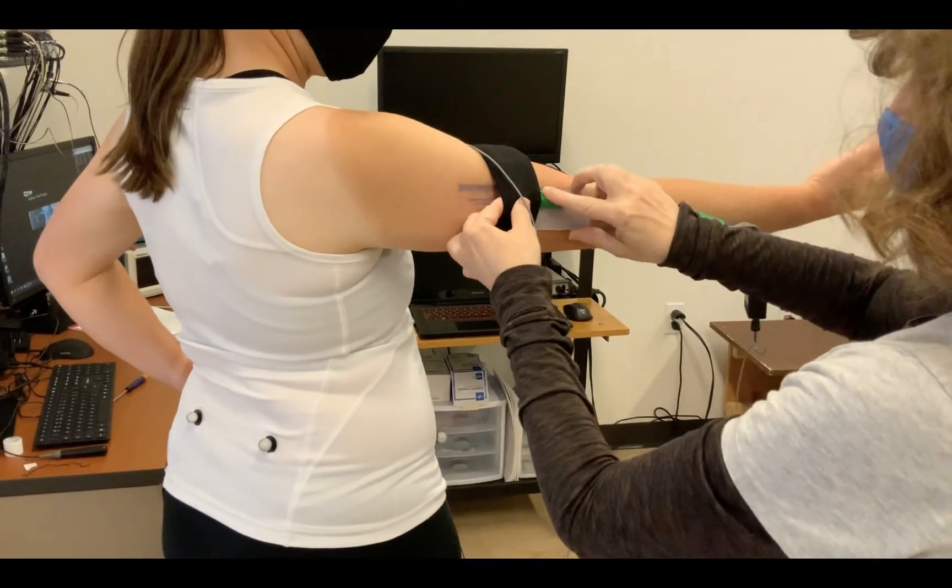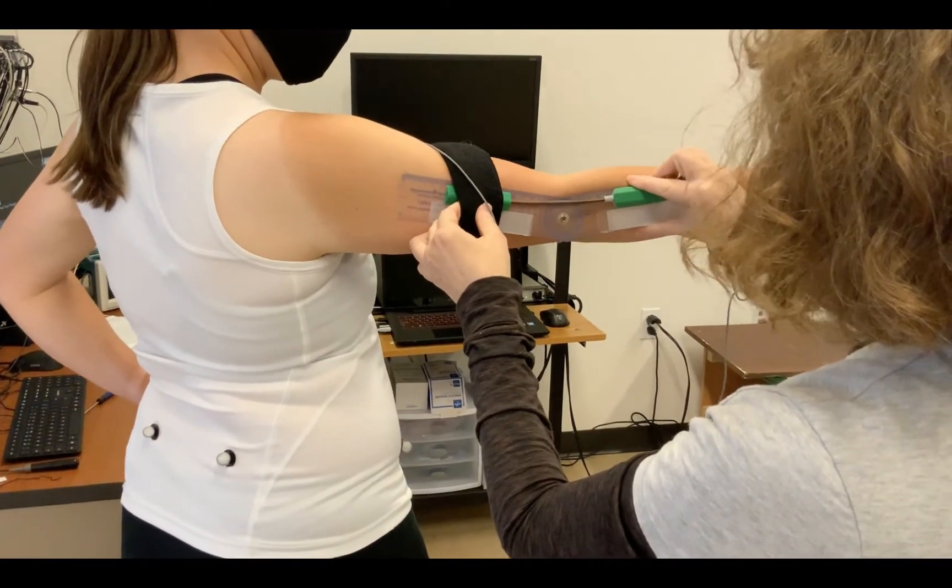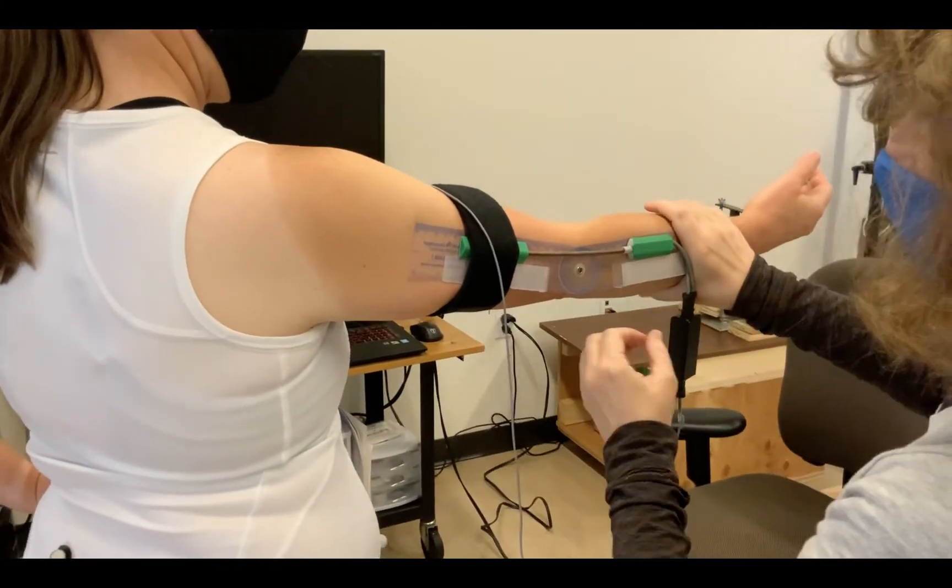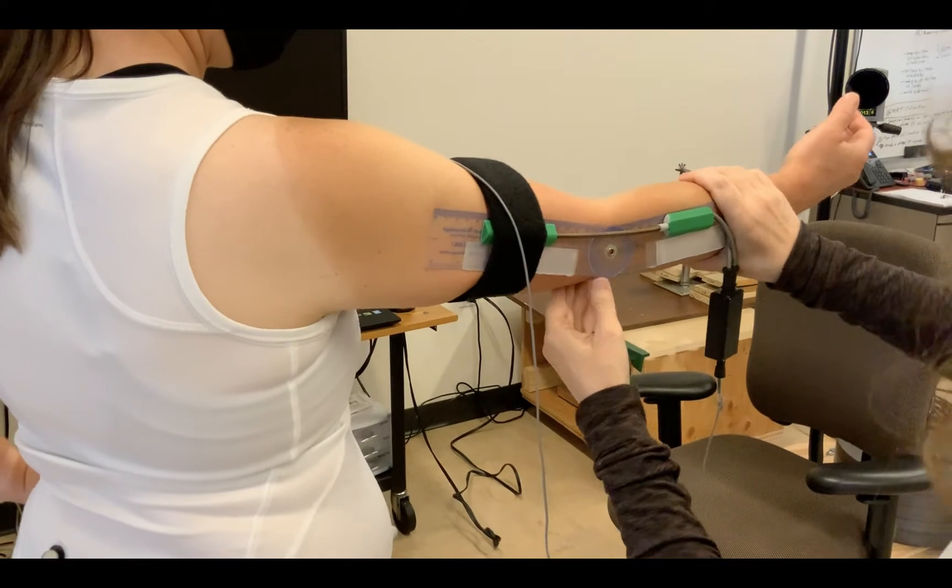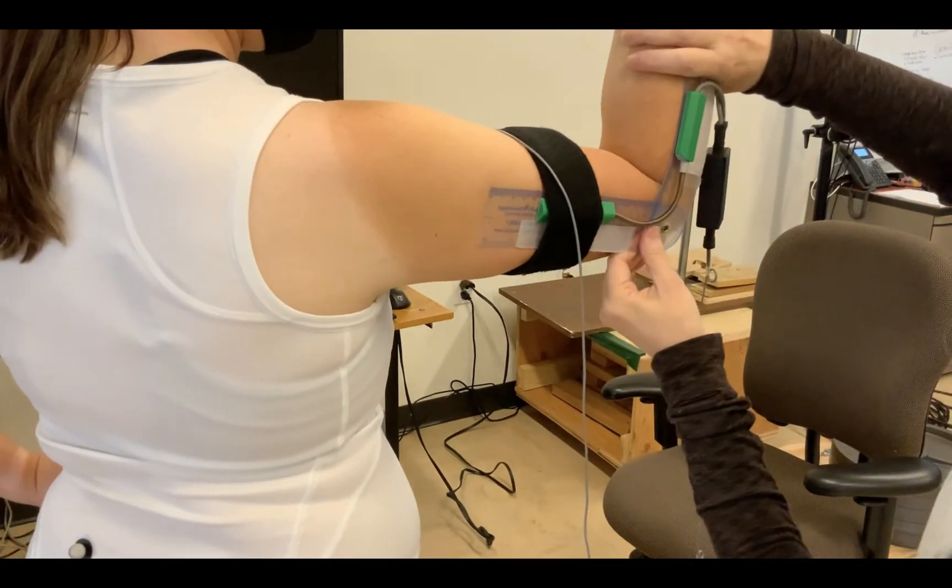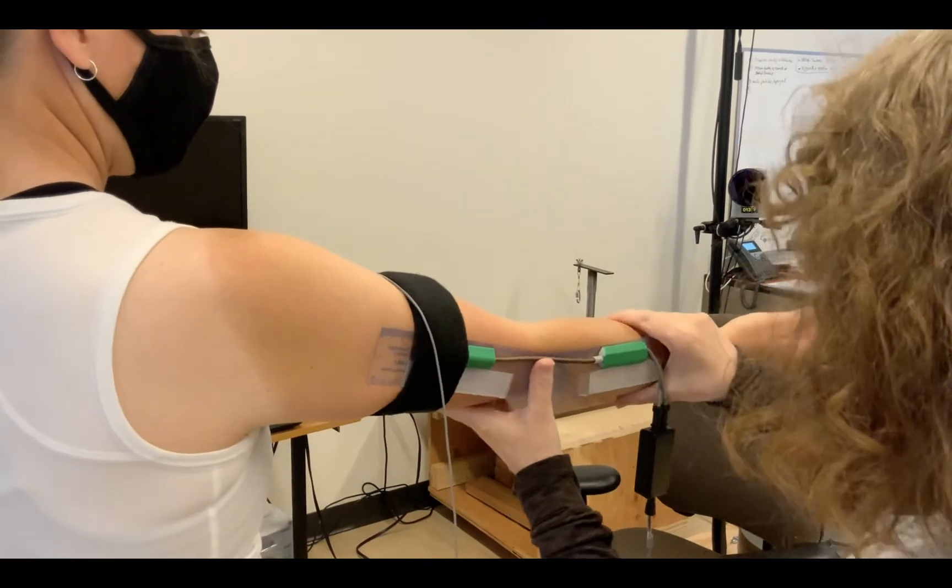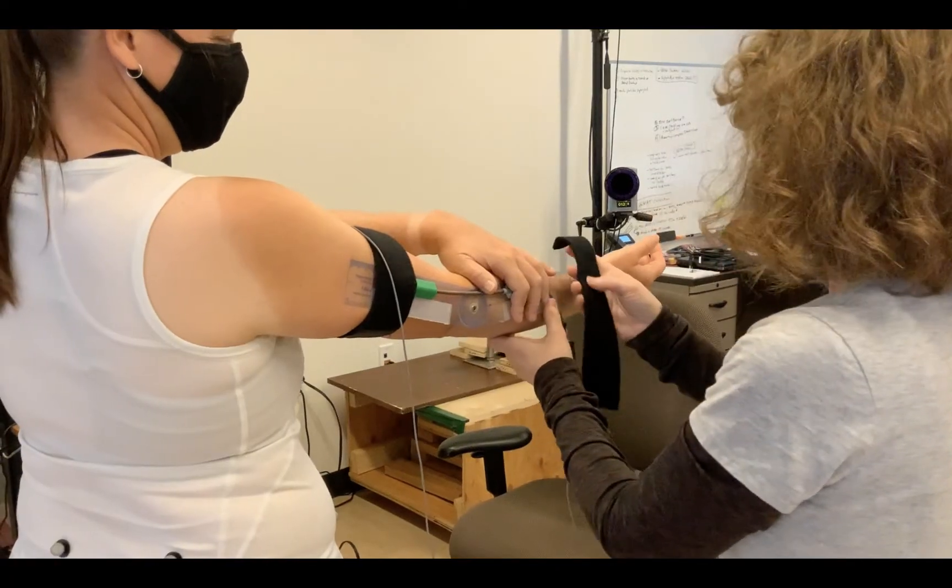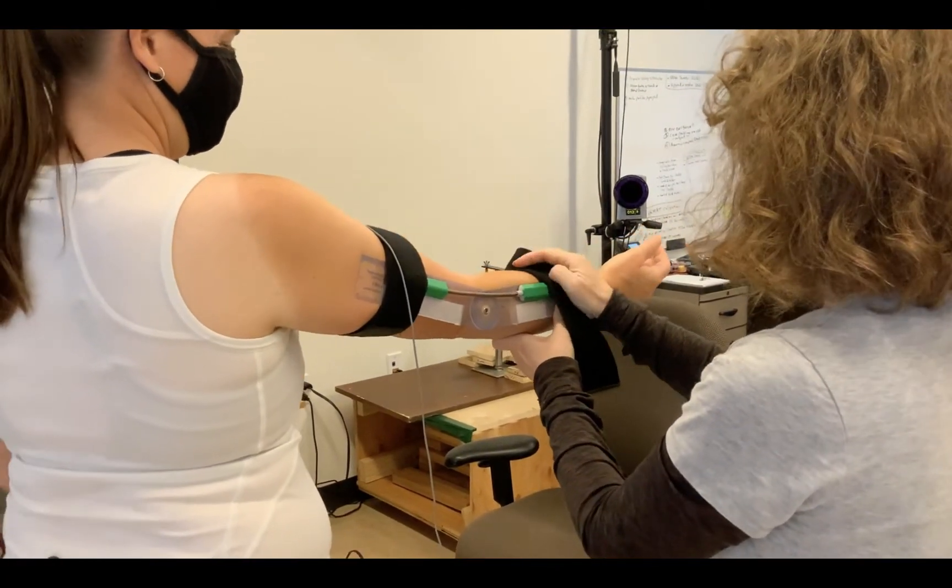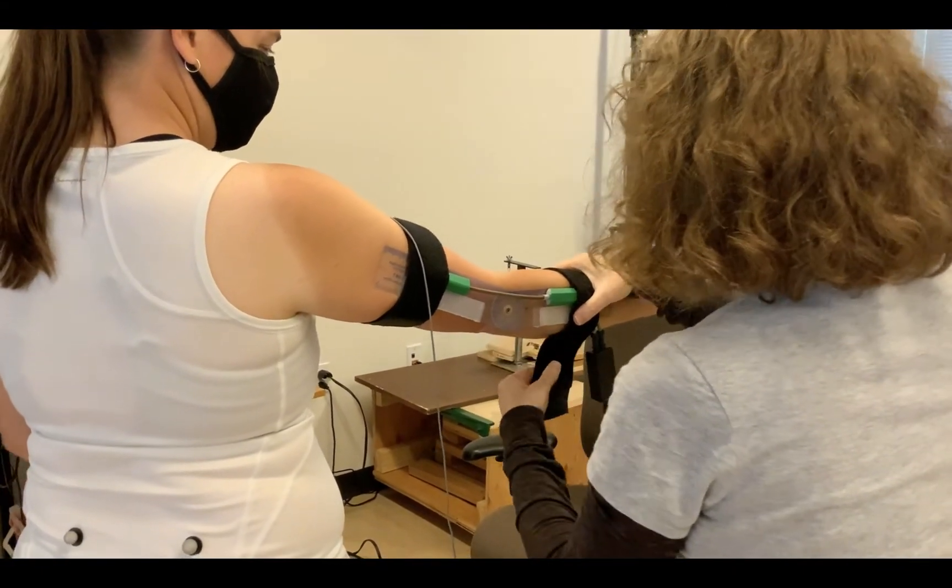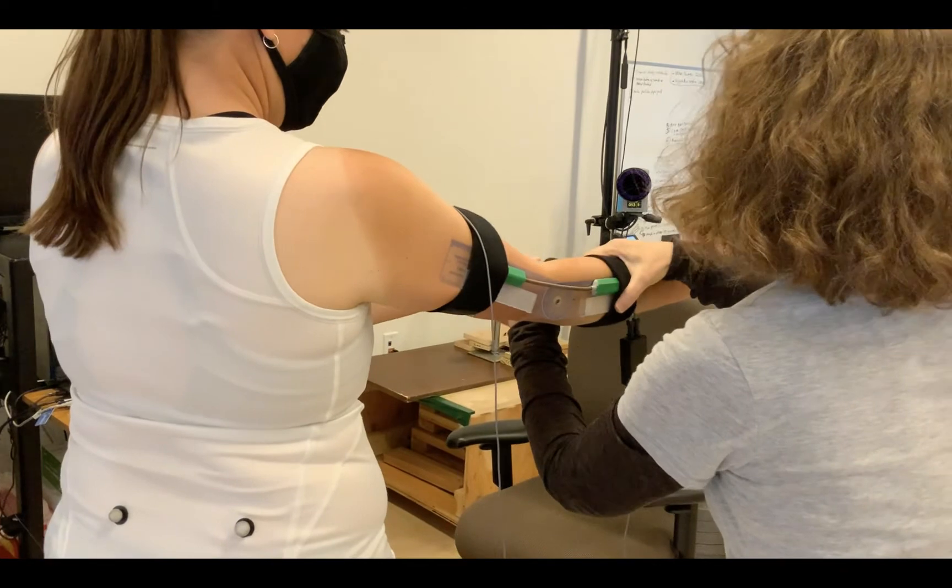Now we're going to attach a goniometer. When you're interested in muscle activity as angle changes, a goniometer is a way to measure angle. You can see that this bends with the subject and we're aligning it carefully with the elbow joint and we'll fasten it on there. This way we get data for angle as a function of time as well as the muscle activity as a function of time.